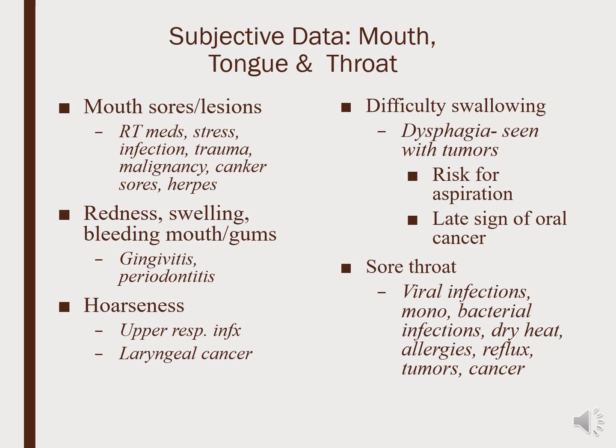We ask about any history of mouth sores and lesions, whether candida infection, canker sores, or history of herpes simplex. Any issues with redness, swelling, or bleeding in the gums. Any hoarseness, especially new onset, or difficulty swallowing such as dysphagia — which puts the patient at risk for aspiration. And any recent histories of sore throats, viral infections, colds, or allergies.